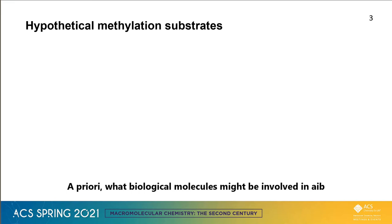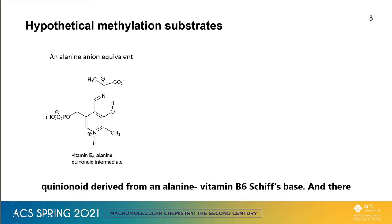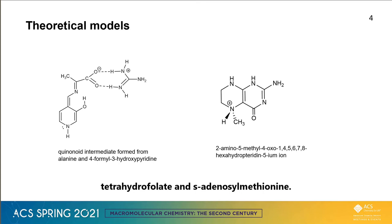A priori, what biological molecules might be involved in AIB biosynthesis? An obvious candidate for the nucleophilic component is the quinonoid derived from an alanine vitamin B6 Schiff base. And there are at least two possible methyl donors: N5-protonated 5-methyltetrahydrofolate and S-adenosylmethionine.